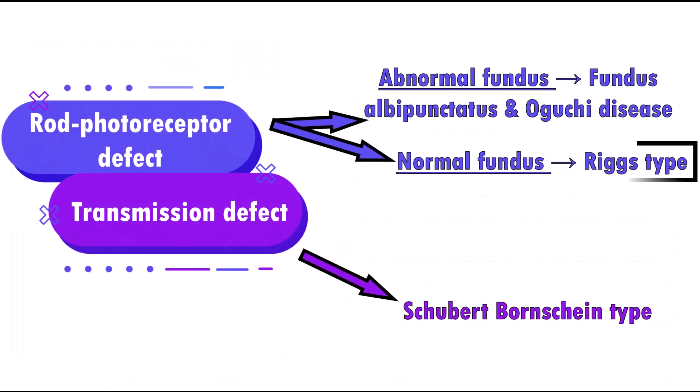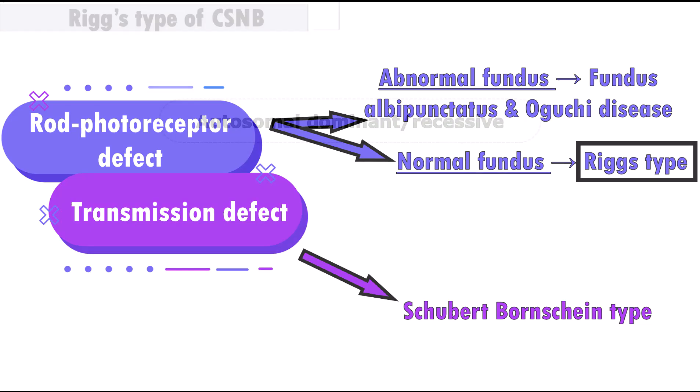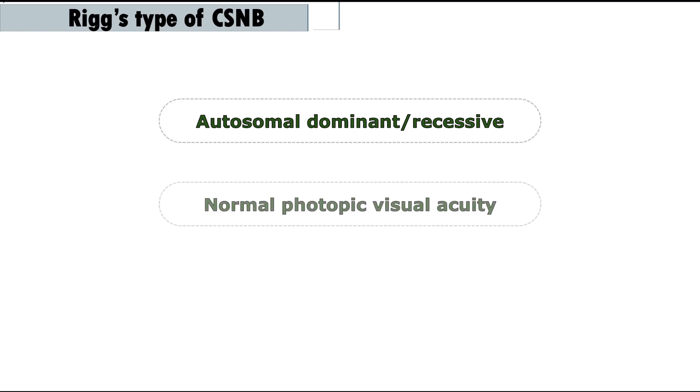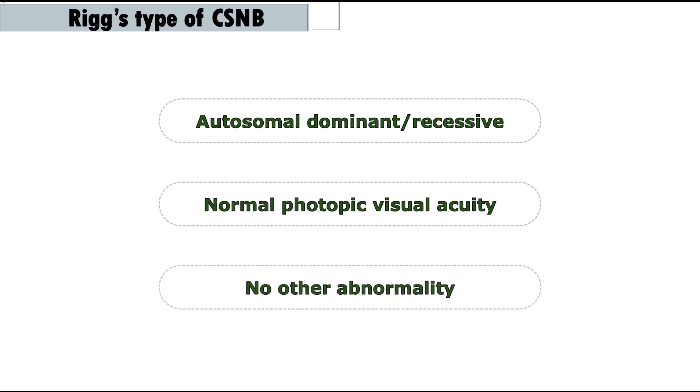The Riggs type of congenital stationary night blindness, which may be either dominant or recessive, is rather mild with only night blindness, normal photopic visual acuity, and no nystagmus or strabismus.